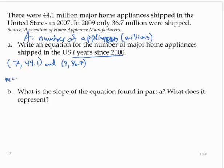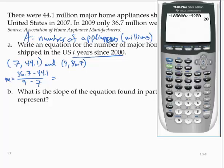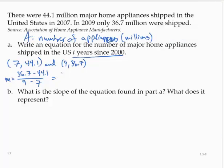Finding the slope, M would be 36.7 minus 44.1 over 9 minus 7. Going to the calculator, we would have 36.7 minus 44.1. So that's negative 7.4 over 2, and so that's negative 3.7.